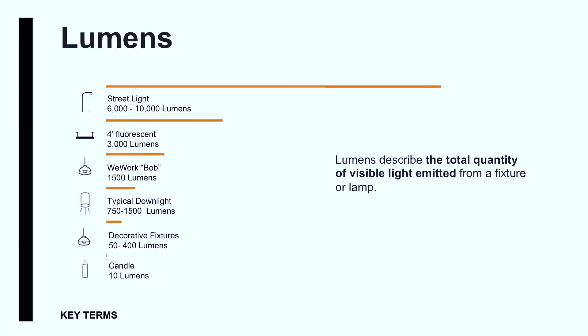So, lumens. Lumens is the word we use to describe a quantity of visible light. A street light may be 10,000 lumens. A typical downlight is about 200 to 700 lumens. A candle would be about 10 lumens. I don't know the word for how many lumens the sun produces because it's a bigger number than I could possibly comprehend — and I studied advanced math.